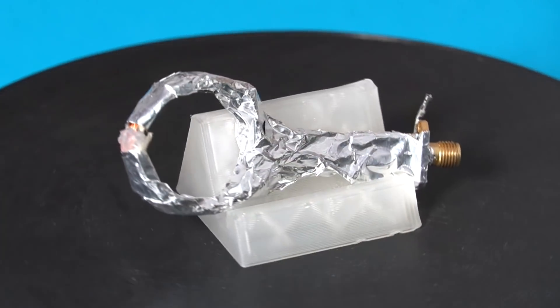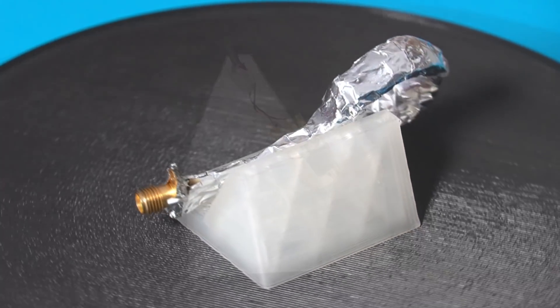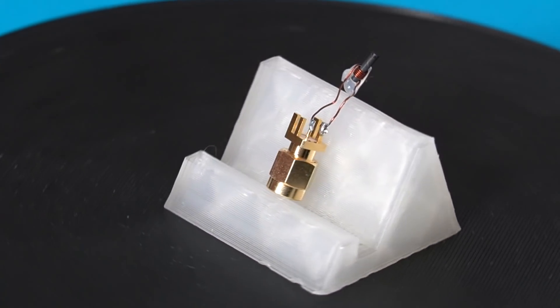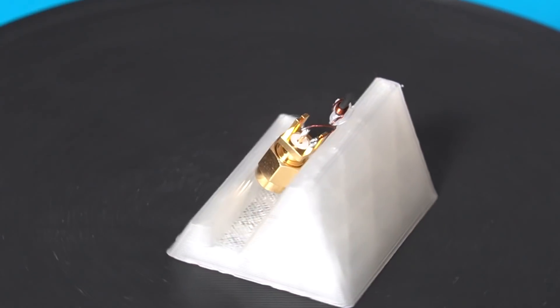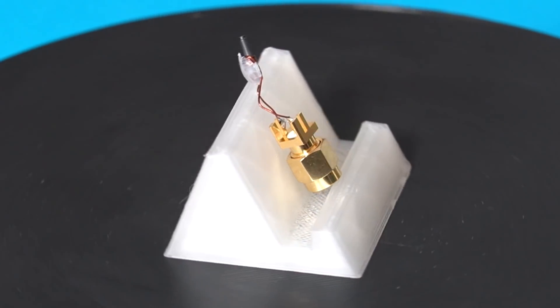Previously I used a large area near field probe that was allowing me to pick up the noise from the entire circuit. But today I will be using this small near field probe that is built from a small ferrite rod and a few turns. This should help us pinpoint the noise source a bit more accurately.